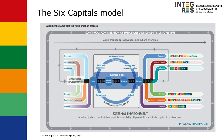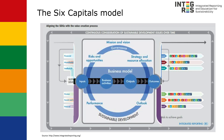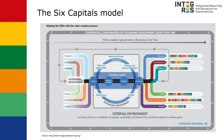Here you can see the six capitals model, aligned with the 17 sustainable development goals. Let's start with the core of the six capitals model: the business model. In this section, the company explains its mission, vision and business activities — in other words, why is the company on earth? The main questions are: what is our strategy? Why do we have a certain service? What do we produce? What will be our future?